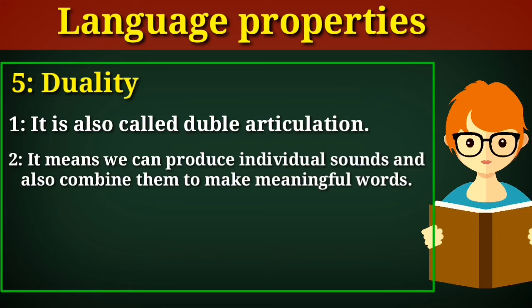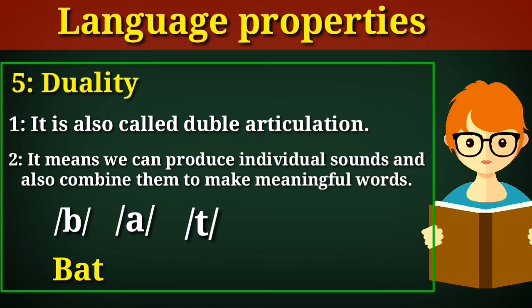For example, in English, the sounds 'b', 'a', and 't' can be combined to form the word 'bat'. They can also be combined in another way to create the word 'tab'. So this is simply called duality, and it is the only characteristic of human language. Animals cannot combine different sounds to make new words like human beings, because they do not have duality. But human language has duality, or double articulation.